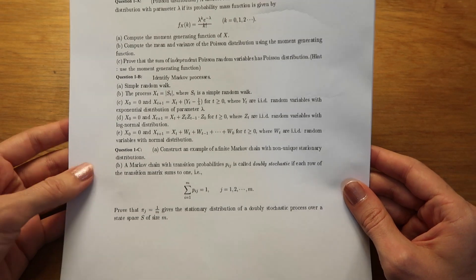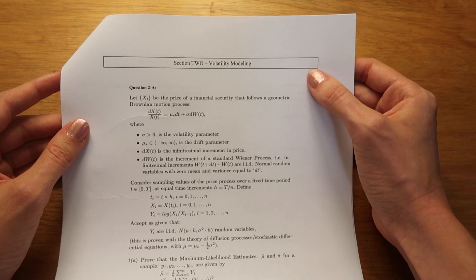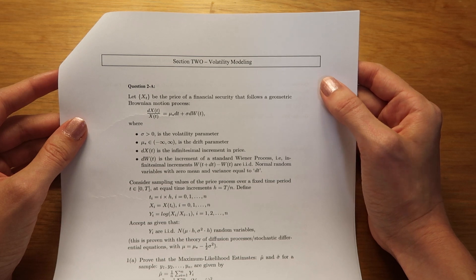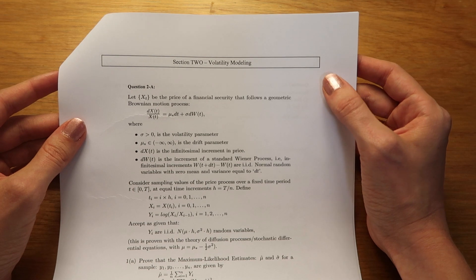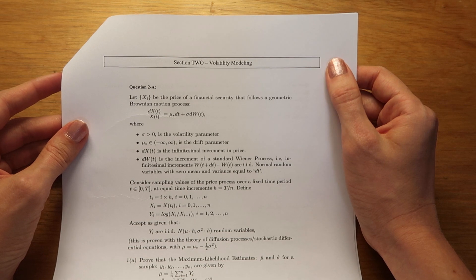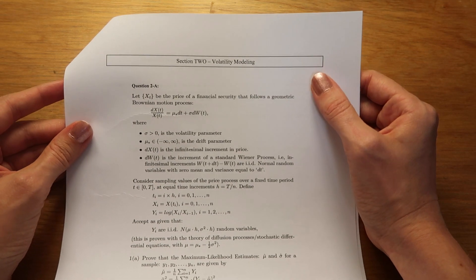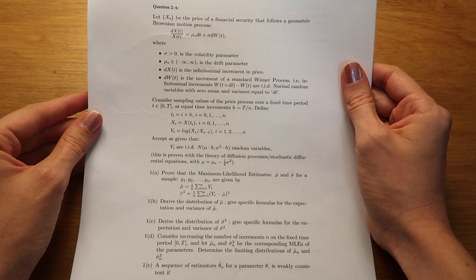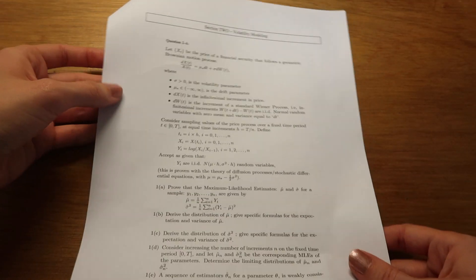Section two deals with volatility modeling. From what I can tell, volatility in this sense refers to an annual standard deviation of the change in price or value of a financial security. I think the volatility is essentially a way that you can estimate a market risk. The question on this page is just one question with many parts. Probably the one word I recognize on this question is Brownian motion.